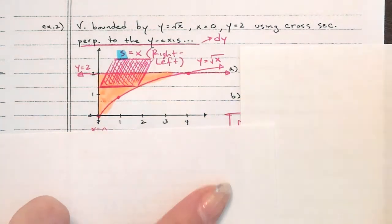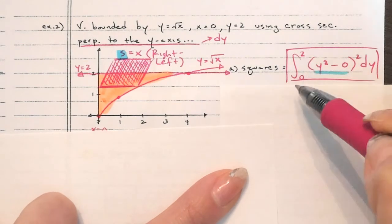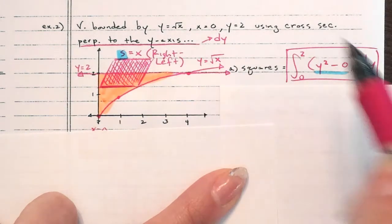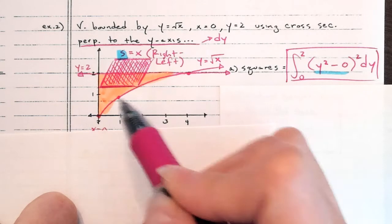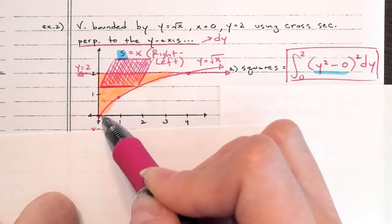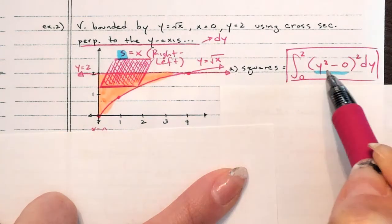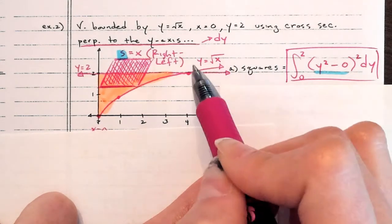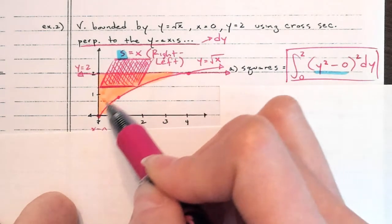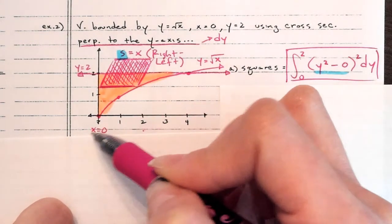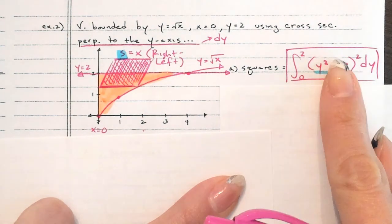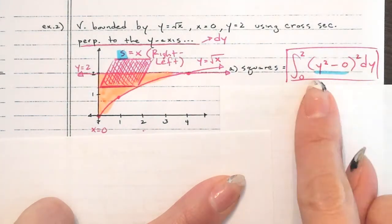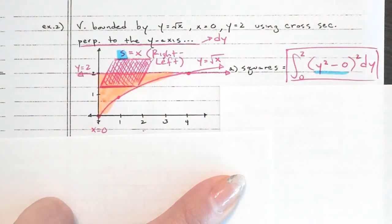Setting up the integral: zero to two, because we're in terms of y and on the y-axis we go from 0 to 2. There's no y² here — I'm going right minus left. The right side of the shaded region is y = √x; solving for x gives x = y². That's why I have y² on the right. The left side is x = 0, so it's y² minus 0. I like writing the minus zero to show you're doing right minus left.